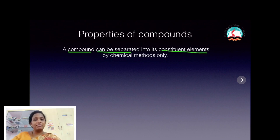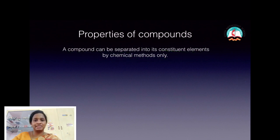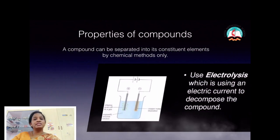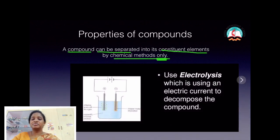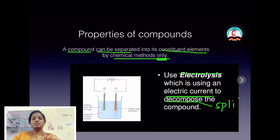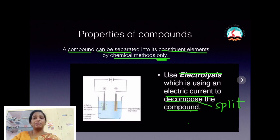What is that chemical method? There is a method called electrolysis. Electrolysis is a method which uses electric current. The electric current decomposes — that is, splits — the constituent elements from the compound. This is the only chemical way to split the constituent elements from a compound; physical methods cannot be used.